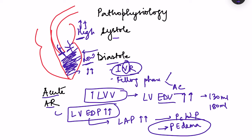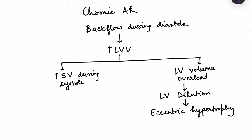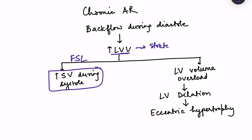In chronic aortic regurgitation, damage to the aortic valve occurs slowly and compensatory changes develop in the left ventricle. The backflow during diastole increases left ventricular volume, and by Frank-Starling's law there is an increase in stroke volume during systole. Frank-Starling's law states that the force of contraction is directly proportional to the initial length of the muscle — as LV volume increases, muscle stretch increases, force increases, and stroke volume increases.